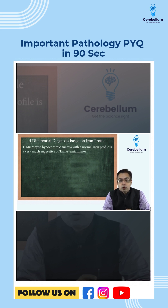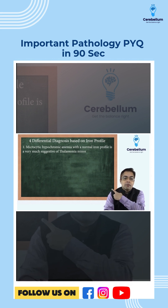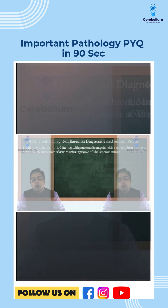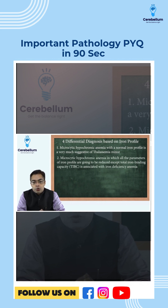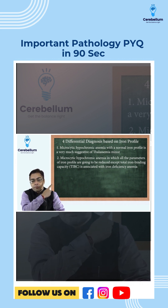Microcytic hypochromic anemia with a normal iron profile is very much suggestive of thalassemia minor. When we talk about microcytic hypochromic anemia in which all the parameters of the iron profile are going to be reduced except TIBC, it is associated with iron deficiency anemia.